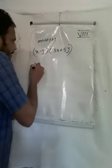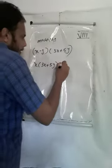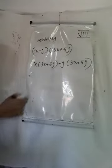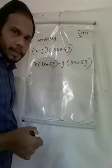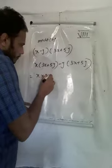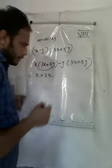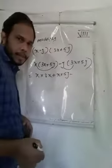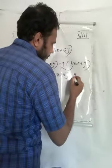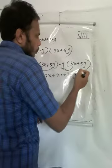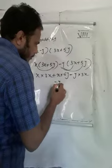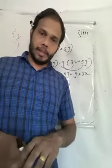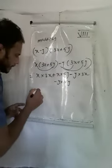So: x into (3x plus 5y), minus y into (3x plus 5y). That gives x into 3x, plus x into 5y, minus y into 3x, minus y into 5y. x into 3x gives 3x squared.